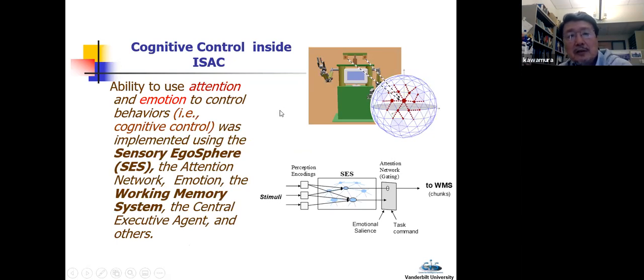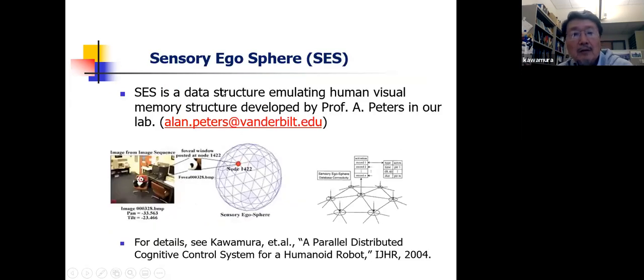So in our architecture, we implemented the cognitive control inside ISAC using various modules or agents, including sensory egosphere, attention network, emotion, working memory system, and the central executive agent. Now sensory egosphere is a data structure emulating human visual memory structure, which was developed by a member of our center, Professor Alan Peters, and description in the paper we published in 2004, which again, I've sent to the organizer. So if you are interested, you may contact Professor Alan Peters.